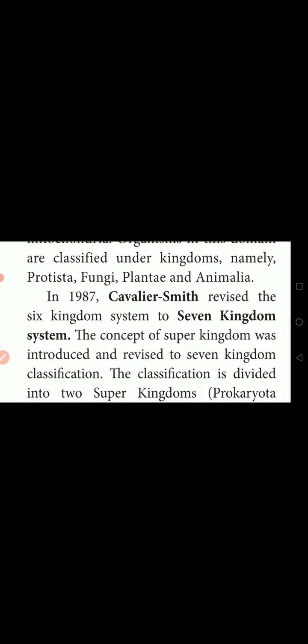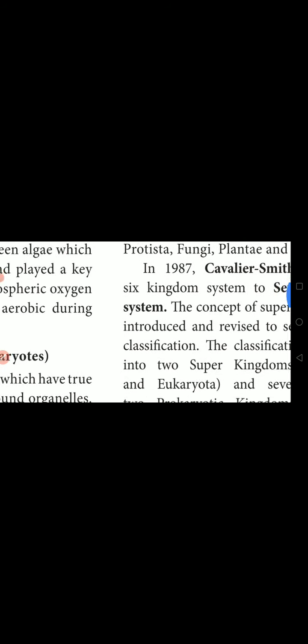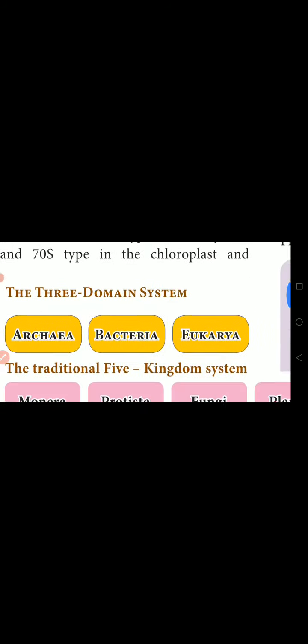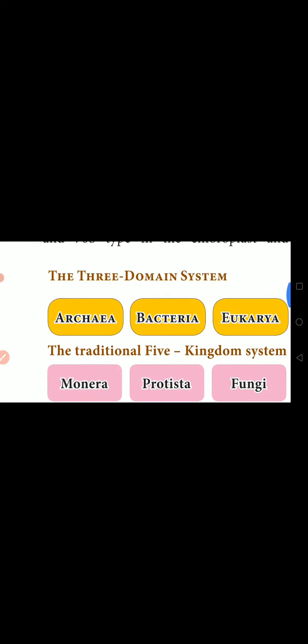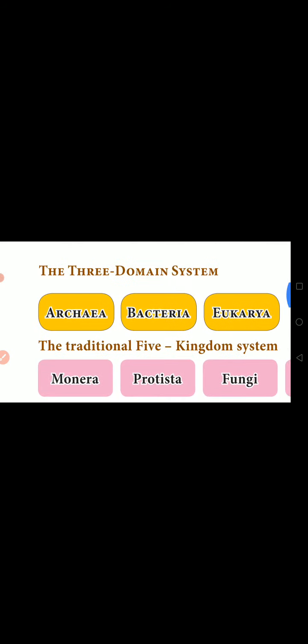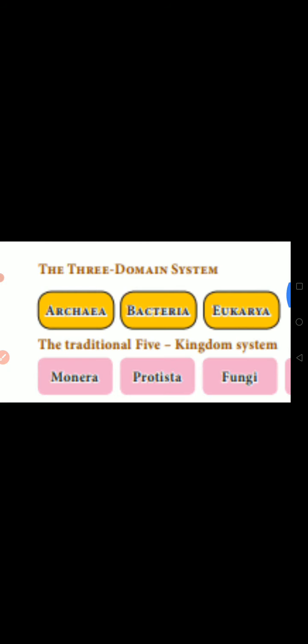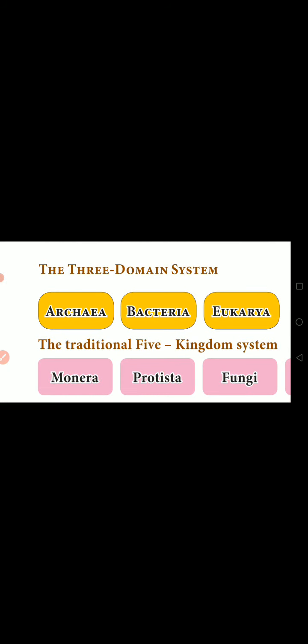In the year 1987, Cavalier Smith revised the Six Kingdoms into a Seven Kingdoms system. Earlier, the nomenclature of animals was done under the three-domain system — that is Archaea, Bacteria, and Eukaryota.